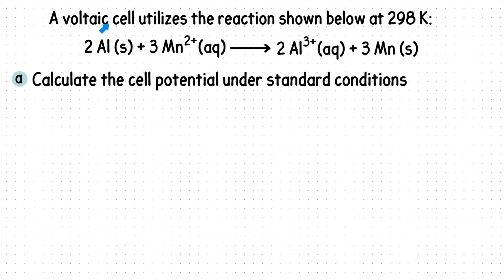Our example states, a voltaic cell utilizes the reaction shown below at 298 Kelvin. Calculate the cell potential under standard conditions.